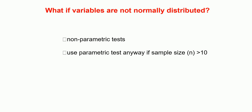In the example shown in GraphPad Prism, our data were normally distributed, therefore we will perform a parametric test. If the data were not normally distributed, we would perform a non-parametric test. Another important point: we can use a parametric test anyway if the sample size is greater than 10. Use a non-parametric test if variables are not normally distributed, and use a parametric test if variables are normally distributed.